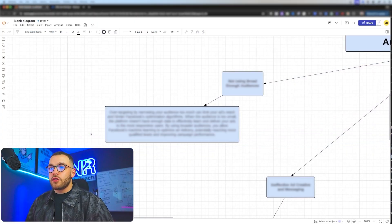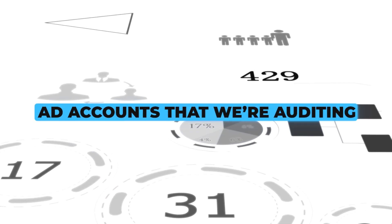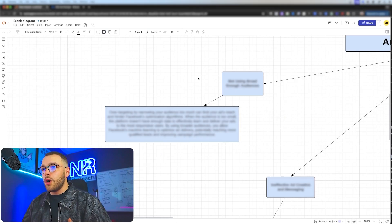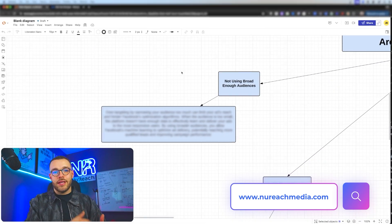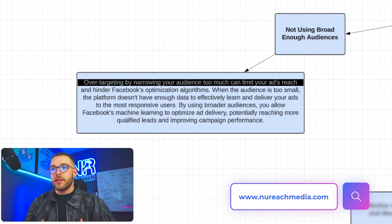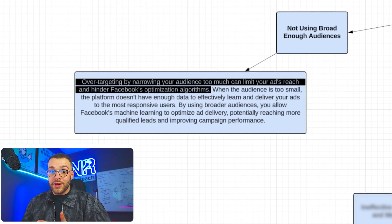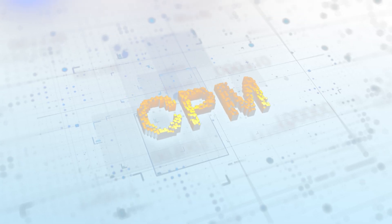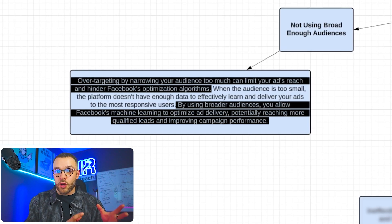Number one — and these are things we see across dozens of ad accounts we audit and manage every single year — is not utilizing broad enough audiences. Gone are the days of pre-iOS 14 and extremely targeted ads. Over-targeting by narrowing your audiences too much is going to limit your ad reach, limit Facebook's algorithm and overall performance, and actually cost you more. The more you narrow your audiences, the higher your CPMs are going to be.